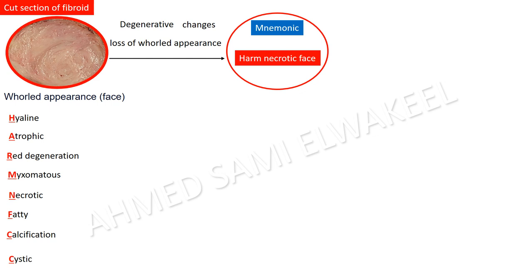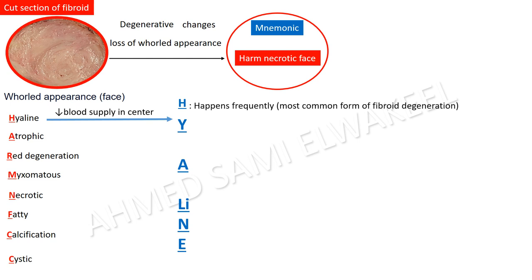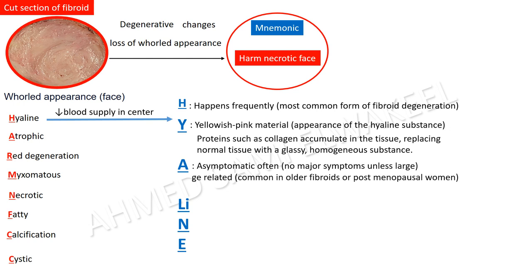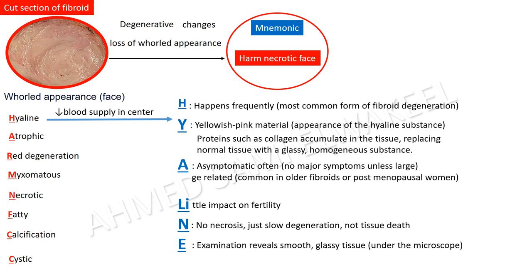Hyaline degeneration occurs due to poor blood supply in the center of fibroids. Mnemonic using HYALINE: H — happens frequently; Y — yellow-pink proteins such as collagen accumulate in the tissue, replacing normal tissue with a glassy homogeneous substance; A — asymptomatic and age-related, common in older fibroids or post-menopausal women; L — little impact on fertility; I — no necrosis, just slow degeneration; N — no tissue death; E — examination reveals smooth glassy tissue under the microscope.